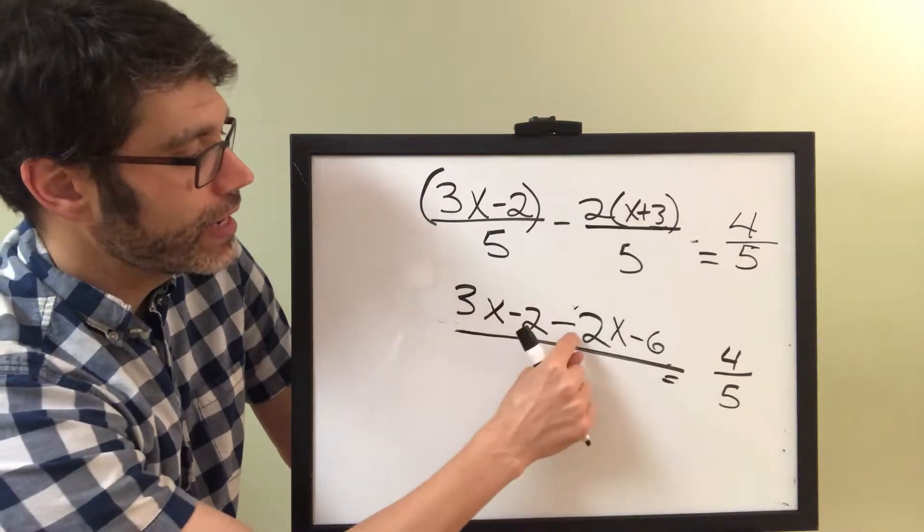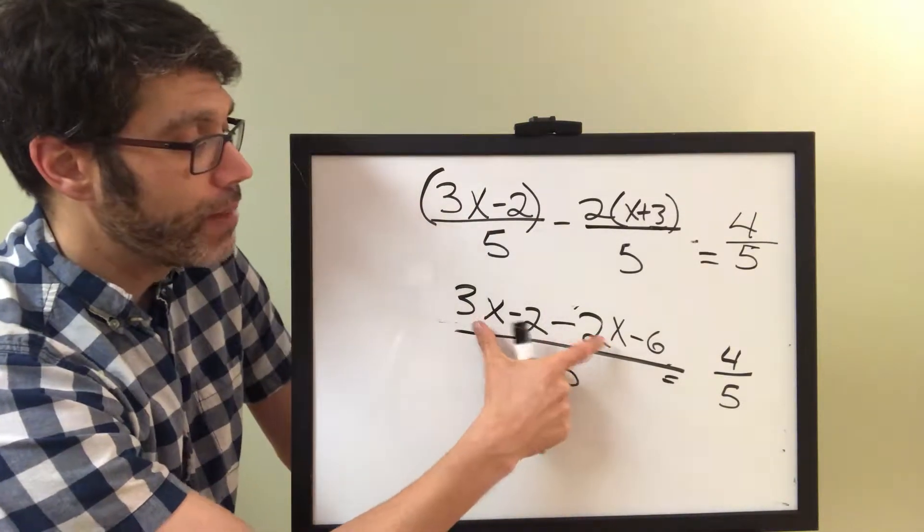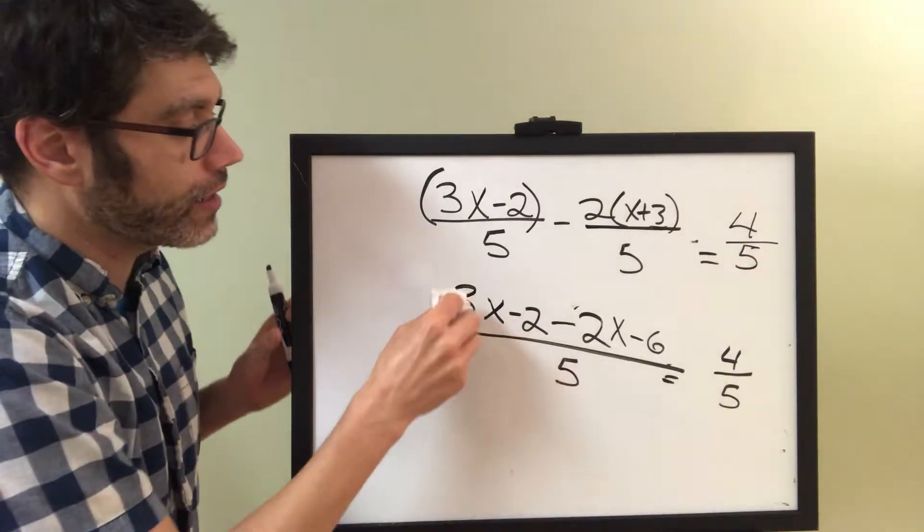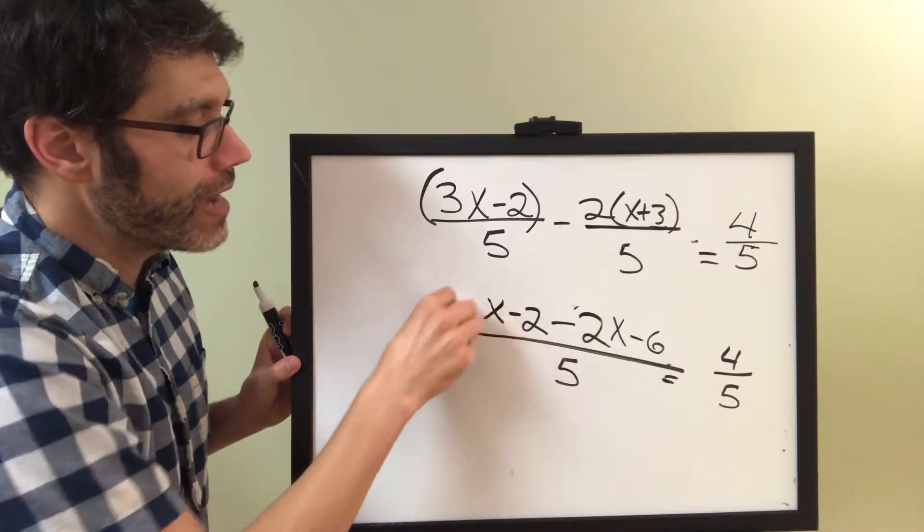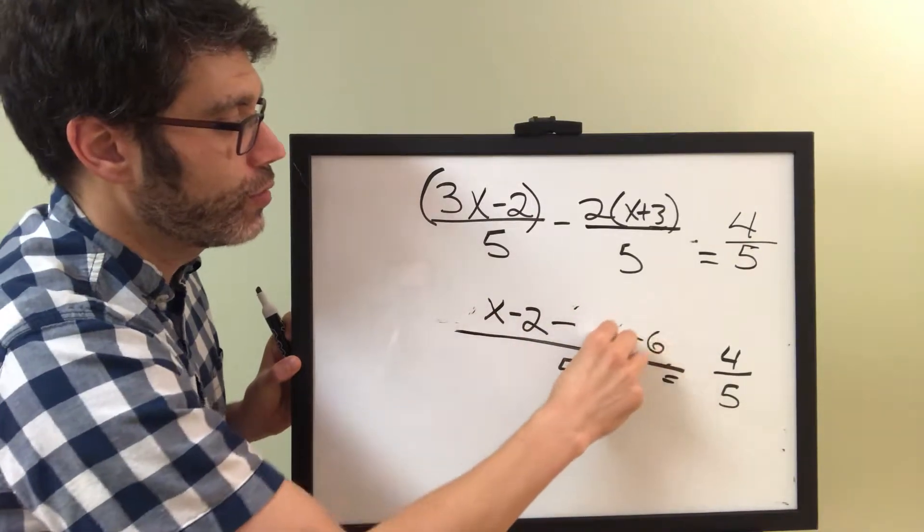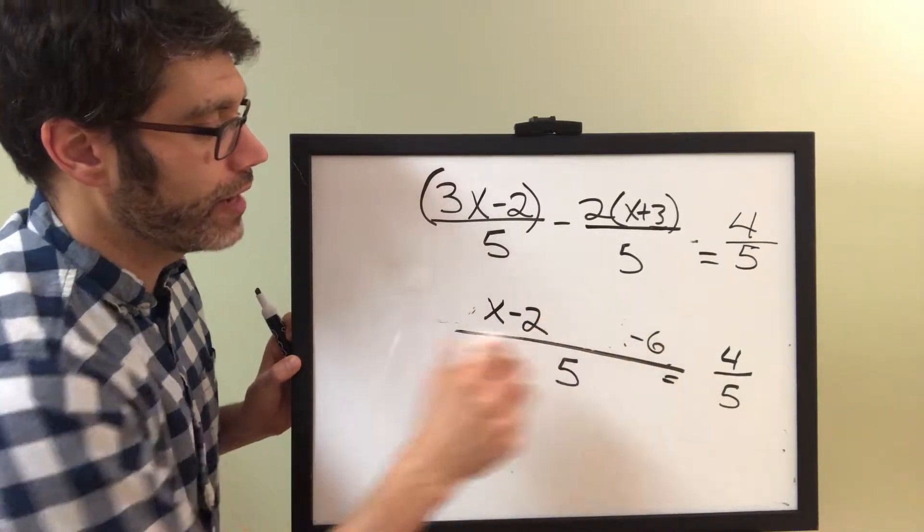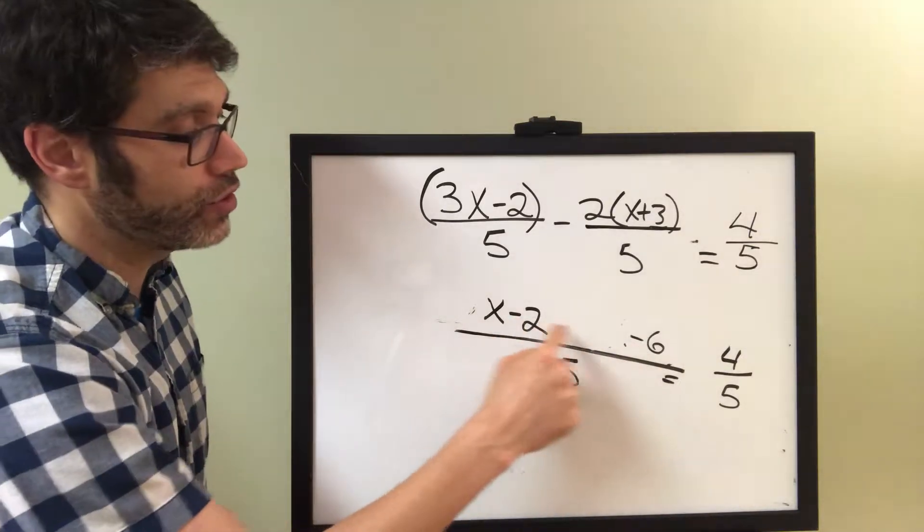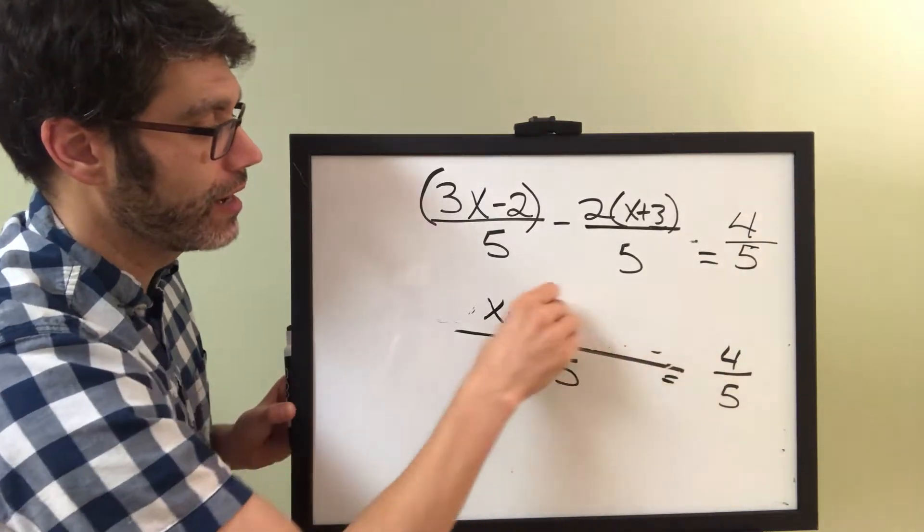We have a 3x and we have a negative 2x. When you combine those, 3x minus 2x is x. If we have 3x's and we subtract 2x's, we've got 1x left. Now, here we have a negative 2 and a negative 6. Negative 2 minus 6 is negative 8.